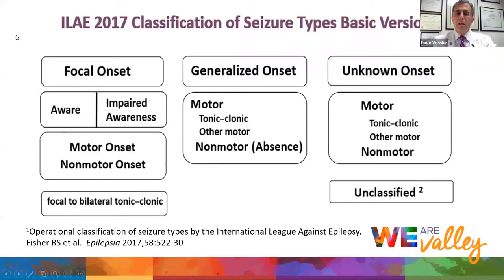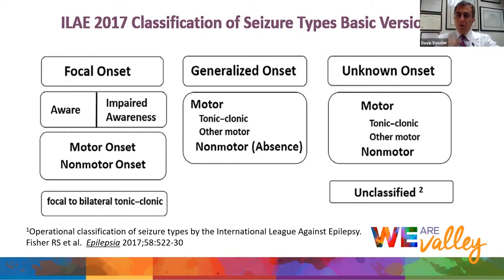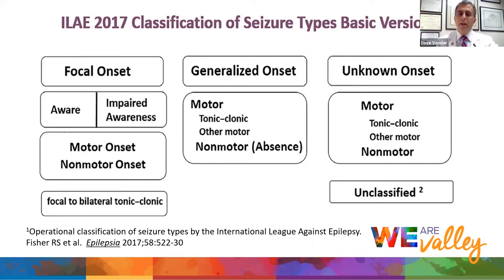Now, generalized onset seizures — the second category — mean the seizure comes from the whole brain, everywhere, all at once. It's like a tree with a string of lights wrapped around it: if you plug it in, the whole tree lights up at once. These tend to be genetic or run in families and are inheritable, so they can be passed from one generation to the next. You can have tonic-clonic convulsions in this category as well, but they begin with no focal part — there's no warning, no feeling it coming. These are really bad because they come on suddenly and people go stiff and fall, at risk for significant injury.